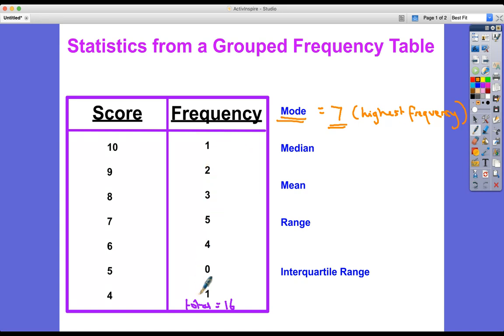So going from smallest to biggest, we've got one person here, got no people here, we've got four here, we've got five here, we've got three here, two here, and one here. So where's the person that has 8 less than them and 8 higher than them? Let's count 1, 2, 3, 4, 5, 6, 7, 8.